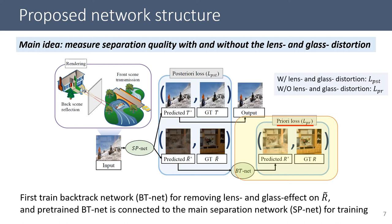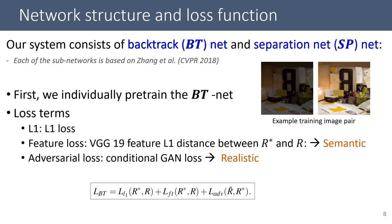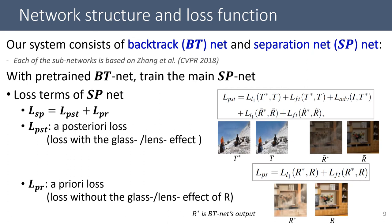This is the overview of our network structure. The main idea is we want to measure the separation quality with and without the lens and glass distortion. As shown in the overview figure, our system consists of two sub-networks: backtrack network and separation network. When training, we first individually pre-train BT-net with common alarm feature and adversarial loss. This is the example training pair. After training some time for BT-net, this pre-trained BT-net is connected to the main separation network, SP-net.